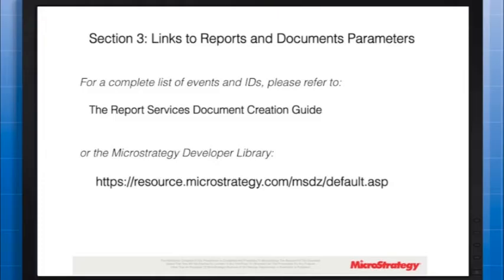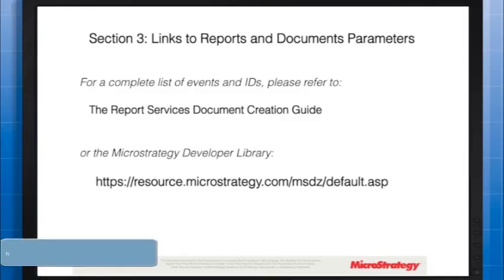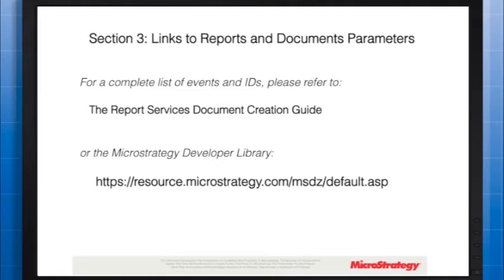Section 3: Links to Reports and Documents Parameters. Before we start this section, it's important to note that you can download a complete list of events and their IDs in the Report Services documentation creation guide, product manual, or the MicroStrategy Developer Library. This section explains each of the MicroStrategy web URL parameters necessary to construct a relative hyperlink to a report or document. Parameters are described in sequence according to how they display in a hyperlink, and by stringing together appropriate parameters, you can produce useful hyperlinks specific to your needs.